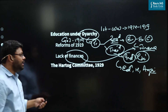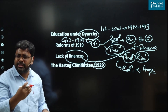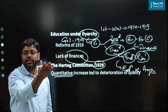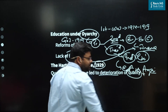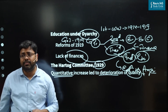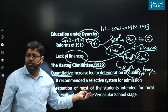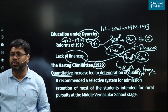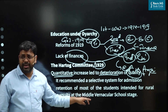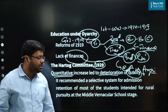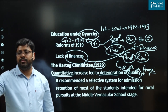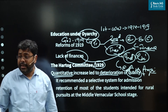Then there was the Hartog Committee in 1929, with recommendations very similar to the Sadler Committee. It said that as there was a quantitative increase in the number of educational institutions, the quality had deteriorated. Those students from rural areas who want to go for rural pursuits should not be encouraged to go for full education — rather, they should be retained at the middle vernacular school stage. Less burden on the education system would create more excellence. Be very clear about the year of this committee, as multiple times UPSC and state PCS exams have asked questions on all these commissions.